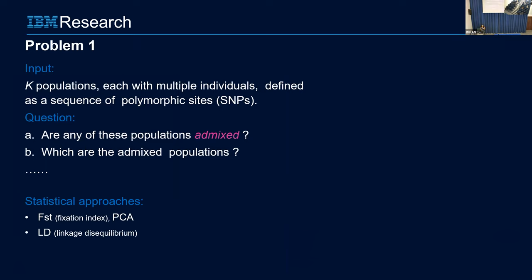Now I'm going to pose a problem. If you have k populations and each population has multiple individuals, and the individuals are defined as a sequence of polymorphic sites — or SNPs — we humans are very similar to each other because we are the same species. What we vary on is only certain positions called single nucleotide polymorphisms. The variation between me and someone here: most of our DNA is identical, other than the X and Y chromosomes — our variations are only in positions, and we focus only on these variations.